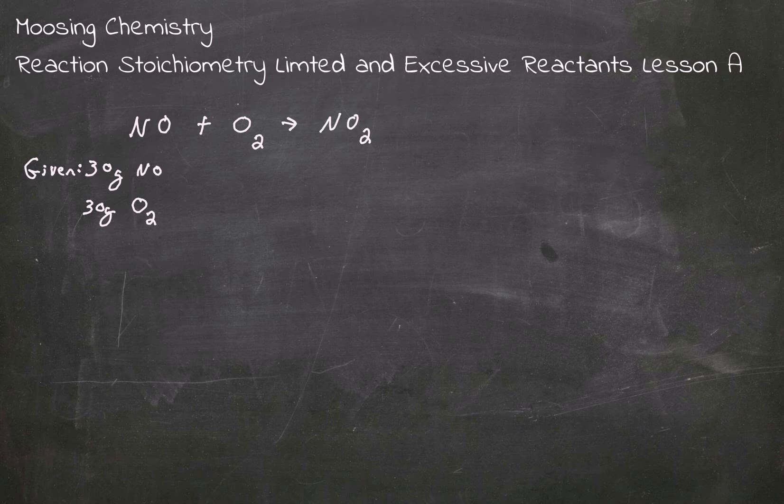Okay, so now, first of all, we have to balance the equation. This equation is not quite balanced. So we need to put a 2 here and a 2 there. By doing that, we balance the chemical equation.